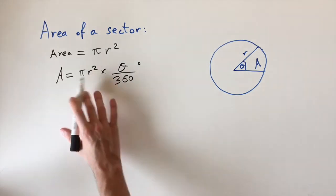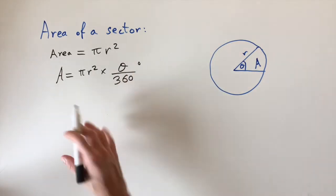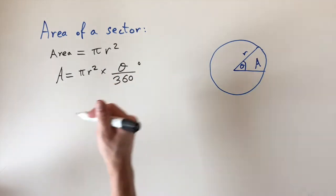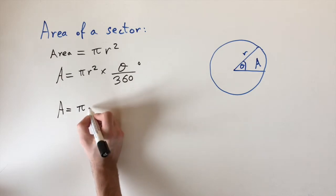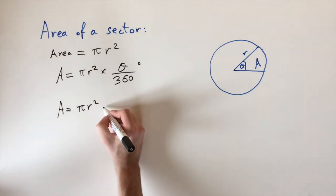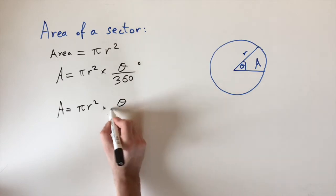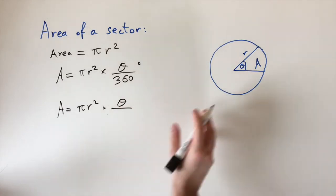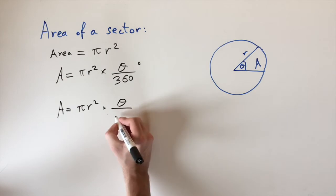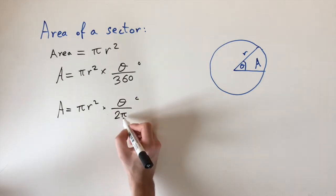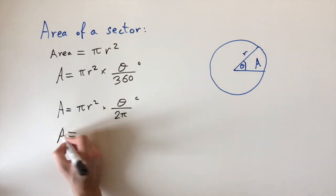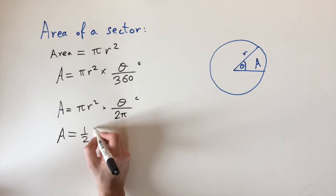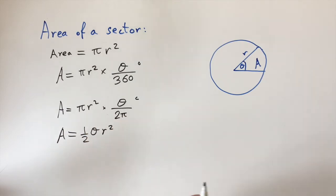That formula isn't particularly nice because it still has pi and 360. In radians, we take pi times r squared and multiply by the angle divided by the total revolution in radians, which is 2 pi. The pi cancels out, giving a really clean formula: Area = ½ × theta × r squared, where theta is in radians.